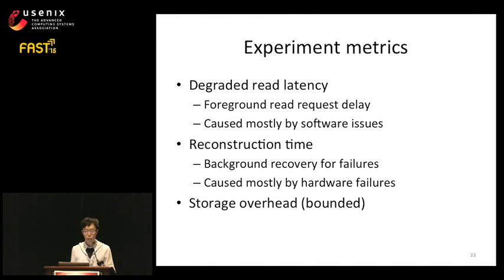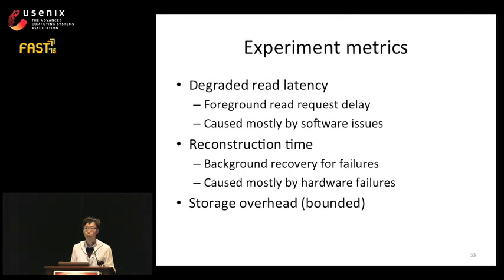We are interested in three metrics. The first is degraded read latency, which occurs when a foreground task reads a block that is unavailable, and recovery time factors into the read request—mostly caused by software issues. For this experiment, we inject faults by deleting a specific block and then reading it to trigger the degraded read. The second metric is reconstruction time, which occurs when hardware failure happens and the system schedules a MapReduce job to recover lost data. For this, we inject faults by taking an entire disk offline.